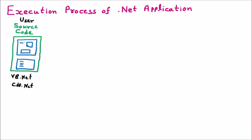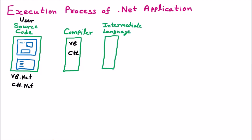In .NET, we have a two-step compilation. First of all, if you are using any language, their respective compiler comes in. If you are using VB.NET, there will be the VB compiler; if you are using C Sharp .NET, then the C Sharp compiler. This compiler is going to convert the source code into the intermediate language, which can be called IL or MSIL — that is, Microsoft Intermediate Language. This whole part is called the first step of compilation, from source code to intermediate language.